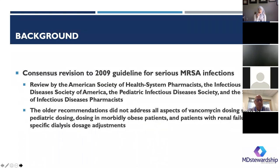This new update, the 2020 guideline, is basically a consensus revision to the 2009 guidelines for serious MRSA infections. This was done by all the major groups: ASHP, SIDP, the PEDS ID, and IDSA. The older recommendations did not address all aspects of vancomycin dosing, like PEDS dosing, dosing in obesity, kidney failure, or dialysis. So this review is supposed to include more of those things.